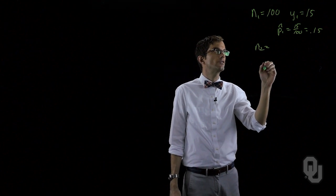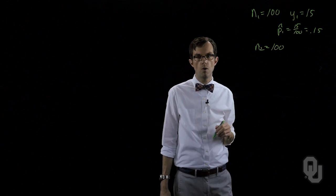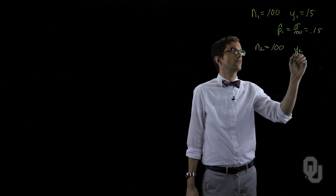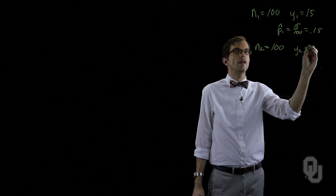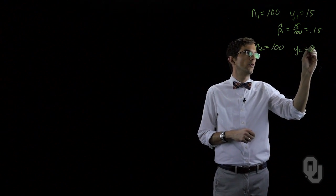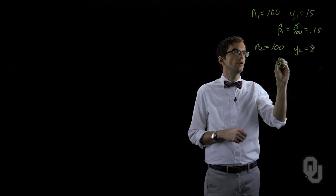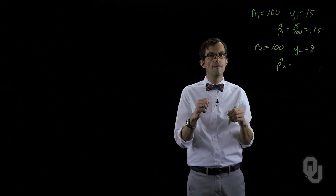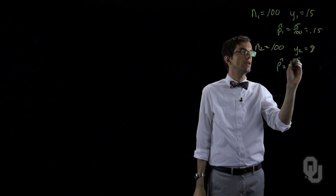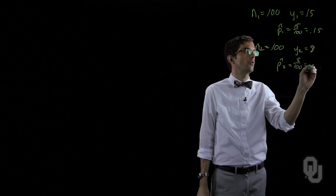In two, this is from layout two, we collected one hundred eight hour shifts and we found from those one hundred that eight failed to meet our throughput requirement. So our estimator for the proportion of days that fail to meet the requirement would be eight over one hundred, which is point oh eight.